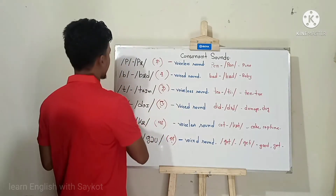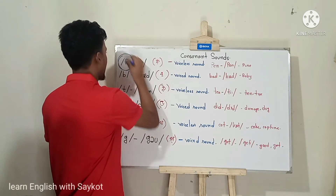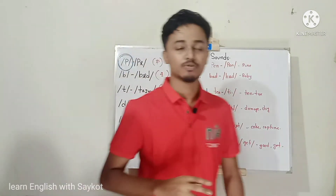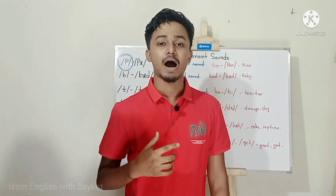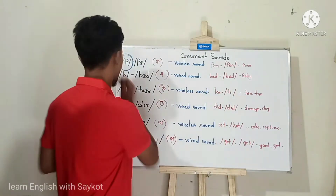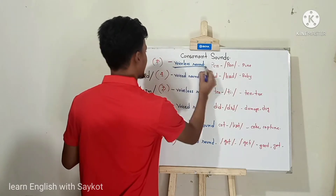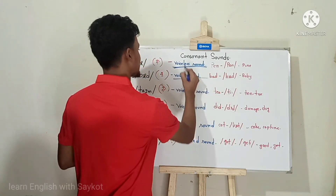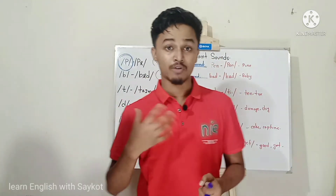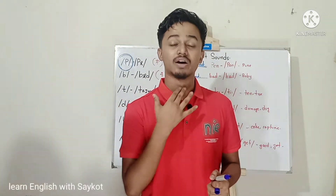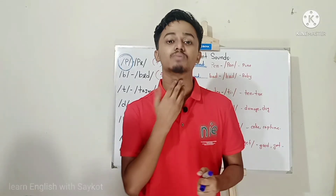Our first sound is: pa, pa, pa, pa. Look at me. This sound is going to be pronounced — pa, pa, pa, pa, pa. This is a voiceless sound. There is a very big difference between voiceless sound and voiced sound, because when you pronounce a voiceless sound, your tongue and vocal cords do not vibrate. A voiced sound will vibrate.